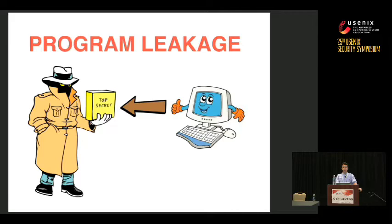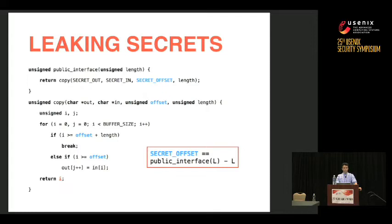At a high level, we want to prevent program leakage. The attacker wants to extract secrets by executing computer programs — either as a process on a machine he has access to or as a service over a network. We assume the attacker calls into some API, some public interface function that takes a number representing a length and returns another number. The implementation calls a copy function that copies a secret input buffer to a secret output buffer, bounded by a secret offset and the given length.